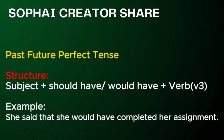Past future perfect tense. Structure: Subject plus should have or would have, plus verb V3. Example: She said that she would have completed her assignment.